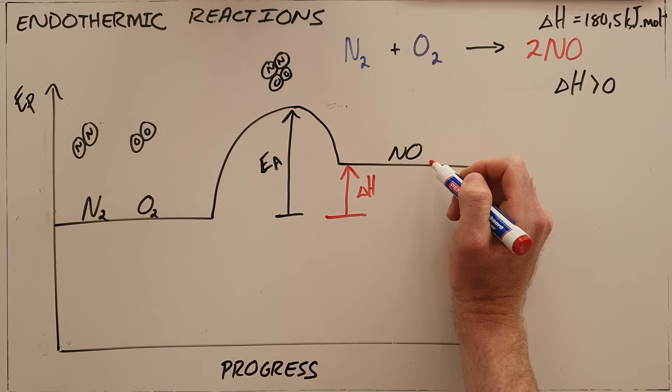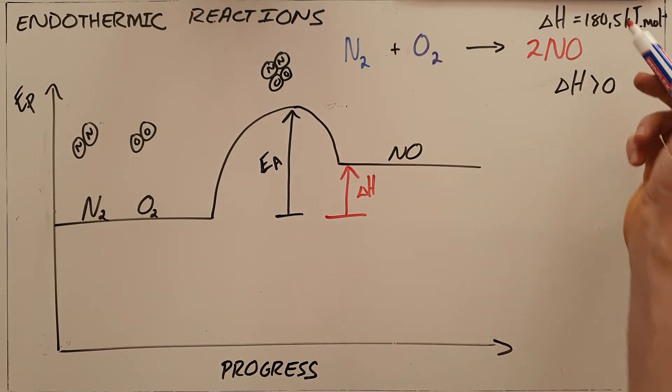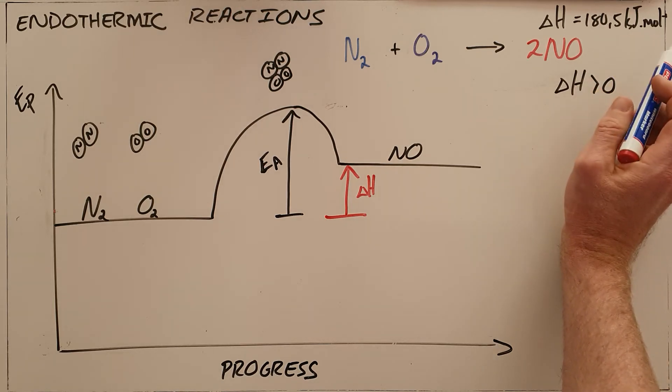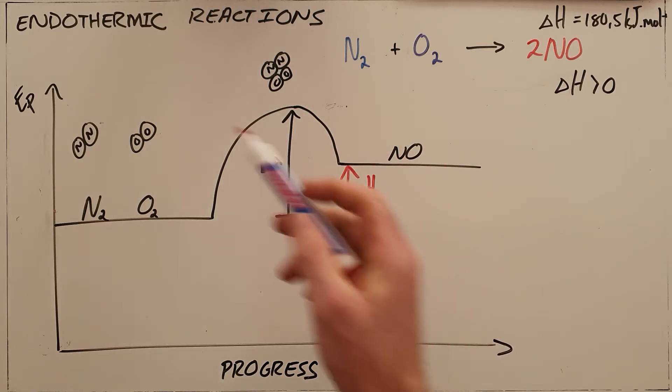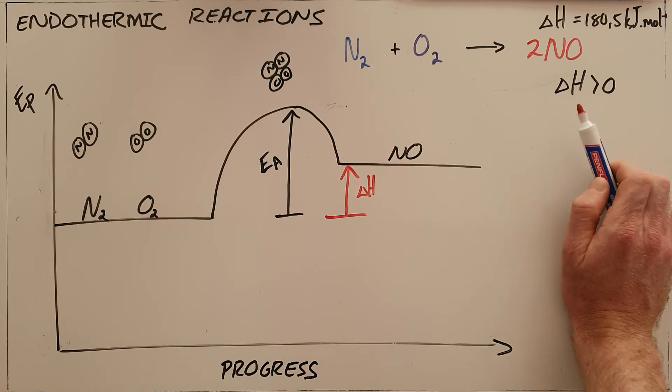The enthalpy change is positive. In this case, the enthalpy change is 180.5 kilojoules per mole. This means that this reaction is constantly absorbing energy from the environment, which means that the environment cools down. Endothermic reactions are defined by a positive enthalpy and a cooling down of the reaction mixture.